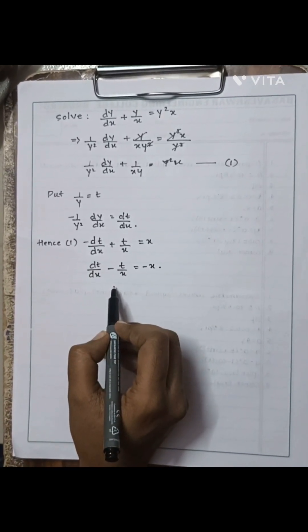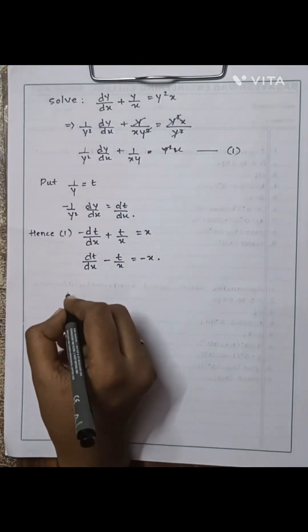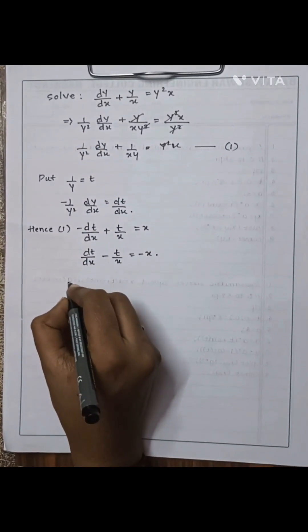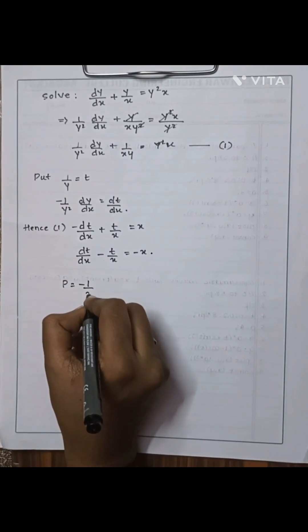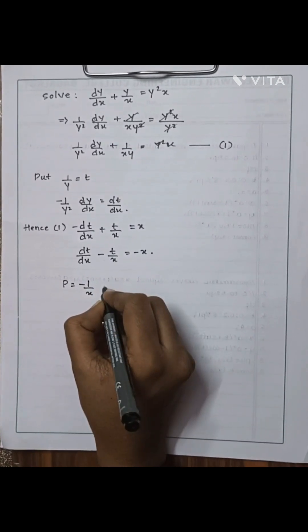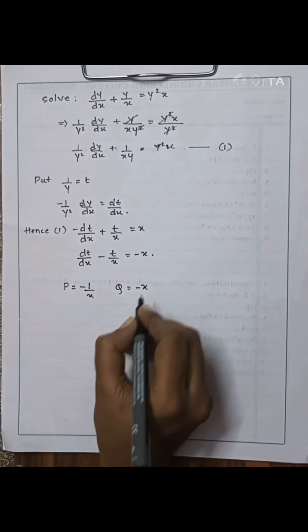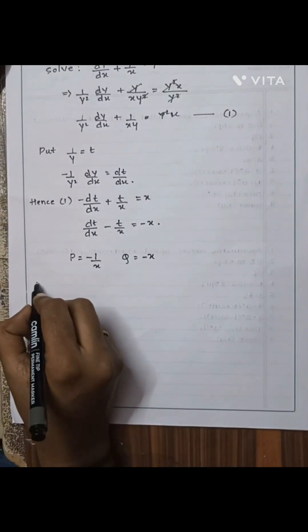This is of the form of a linear equation, where P = −1/x and Q = −x.